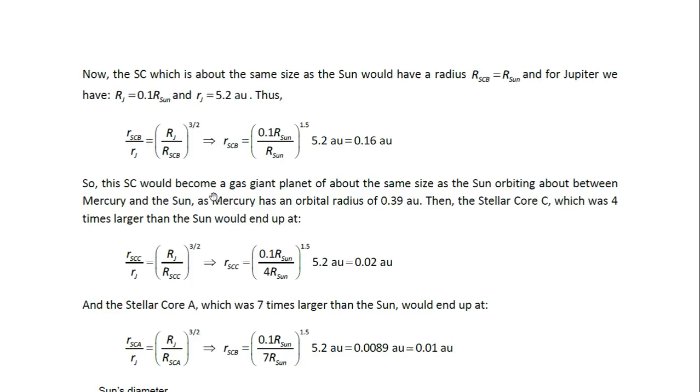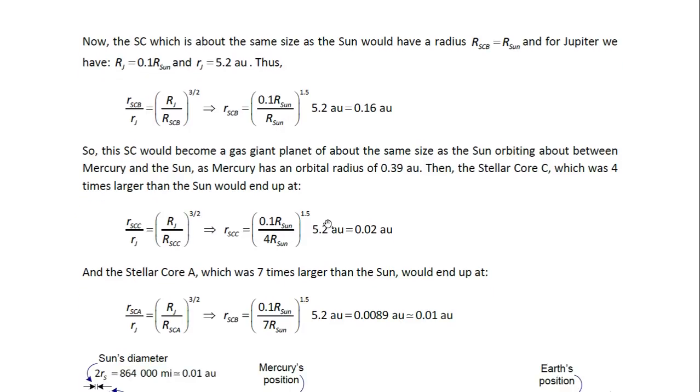So this stellar core would become a gas giant planet of about the same size of the Sun, orbiting about between Mercury and the Sun, as Mercury has an orbital radius of 0.39 AU. It's just a little over twice what 0.16 AU would give us. It would be 0.32. A little bit larger, but close.